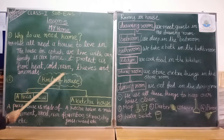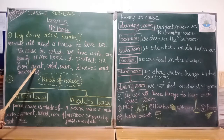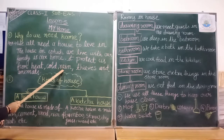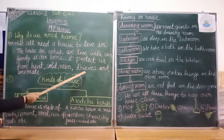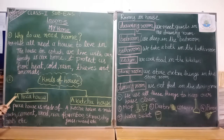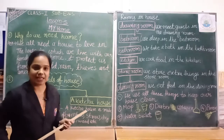What does it protect us from? Heat means warm, cold means 'thand', rain means 'barish', thieves means 'chor', and animals means 'janwar'. Our house is saving us.